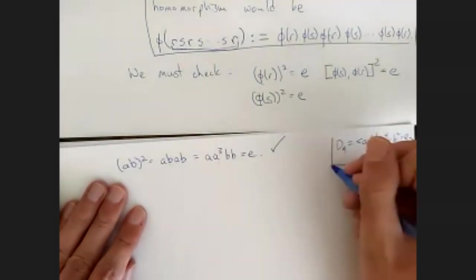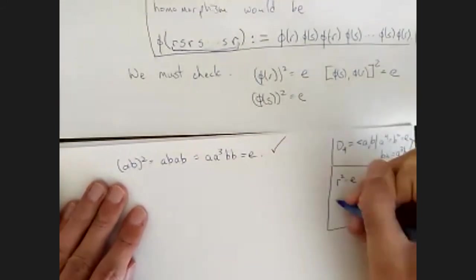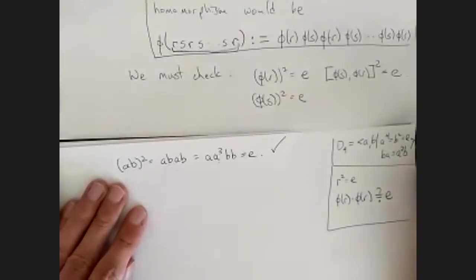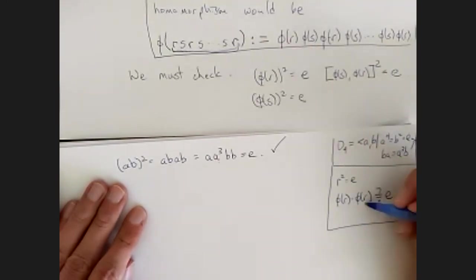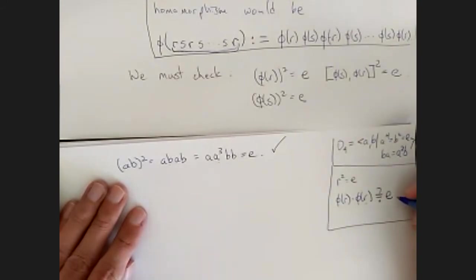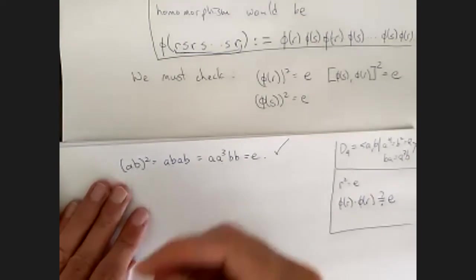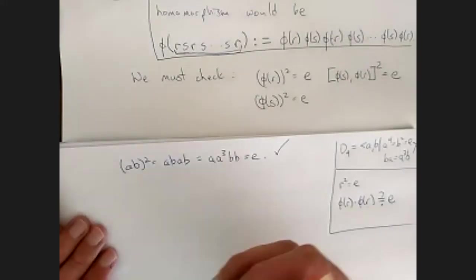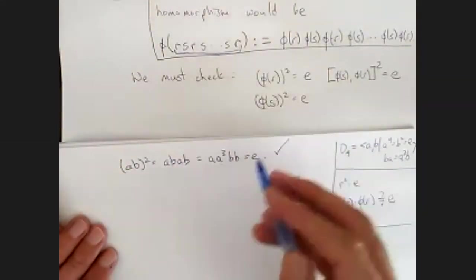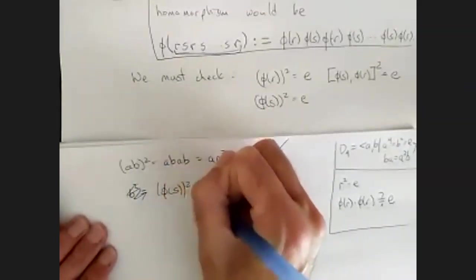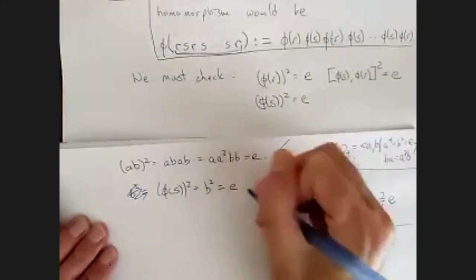Let me reiterate what the problem could be. The problem is that R² is the identity, but imagine if phi(R)·phi(R) was not the identity — that would be a problem because phi(R²) has to equal phi(R)·phi(R), and phi of the identity always has to be the identity in D4. That's why we're checking all these things. Now we check for phi(S). Phi(S) = B, so we check B squared. In D4, B² is the identity, so that's fine.